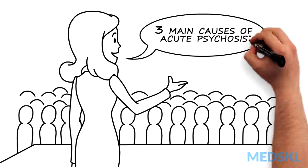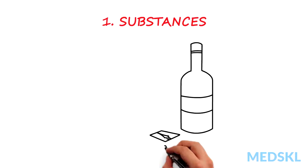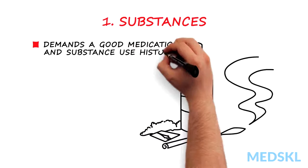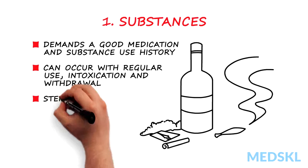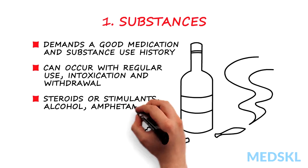There are three main causes of acute psychosis that you should consider. The first is substances. A variety of substances can induce psychotic symptoms, and you should always get a good medication and substance use history. Depending on the substance, psychosis can occur with regular use, intoxication, and withdrawal. Examples of substances that can cause psychosis include prescription drugs such as steroids or stimulants, alcohol, and illicit drugs like amphetamine, methamphetamine, cocaine, and cannabis.